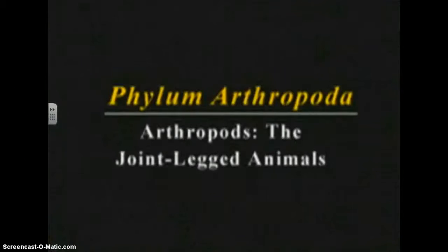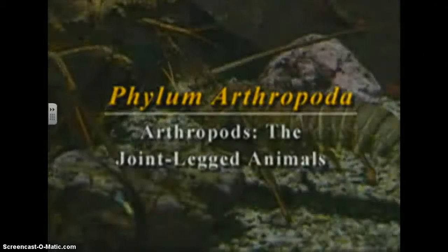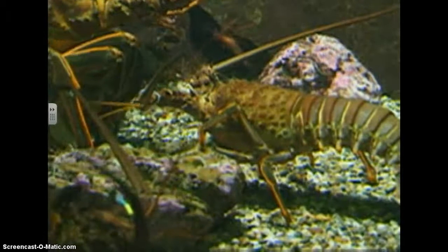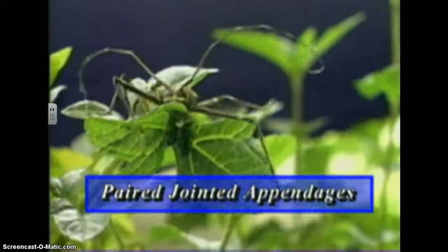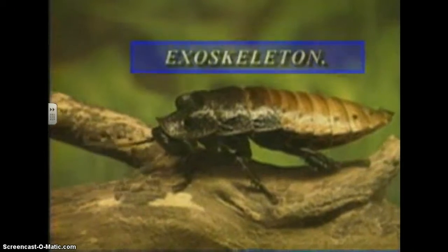The next phylum, the arthropods, or joint-legged animals, is the largest animal phylum. In fact, there are more species of arthropods than are found in all the other phyla combined. Some of the most familiar arthropods are spiders, bees, ants, and butterflies. All arthropods share the same characteristics. They all have paired jointed appendages such as legs, antennae, and mouth parts. The bodies of all arthropods possess a hard outer covering called an exoskeleton that provides protection for their internal organs and gives the ends of their muscles a place to attach.